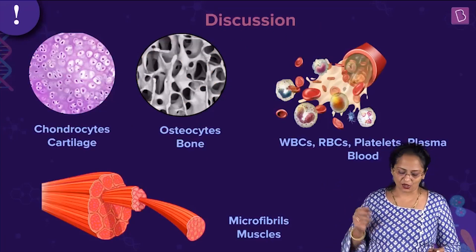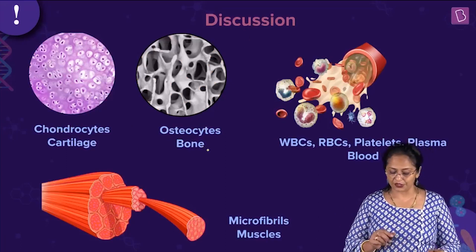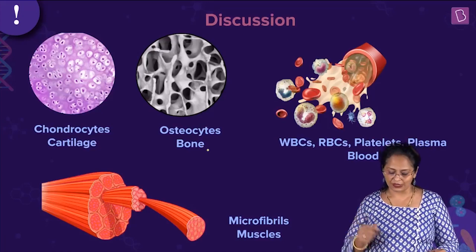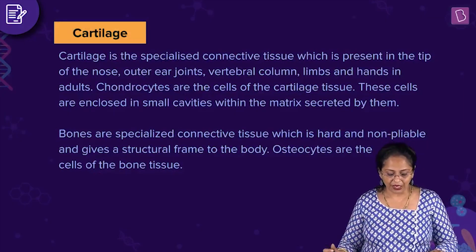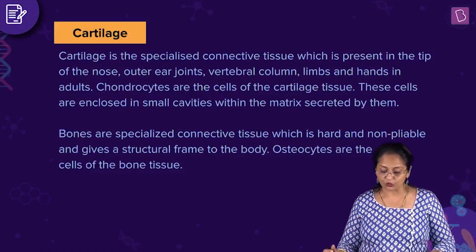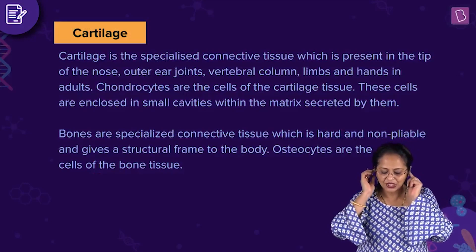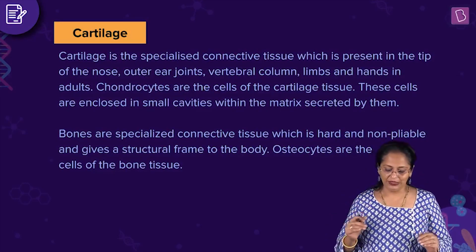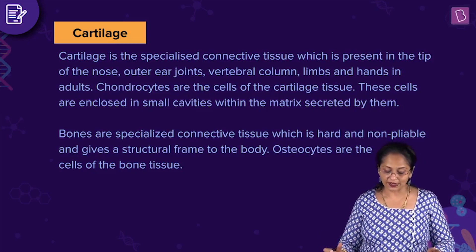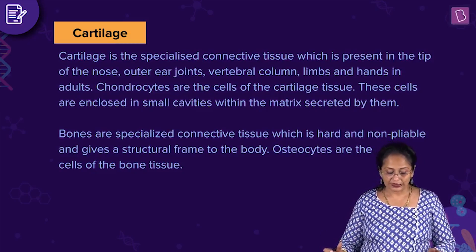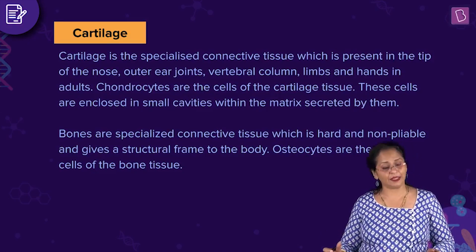You can see the images of chondrocytes found in cartilage, along with bone and blood components and the myofibrils in muscles. Cartilage is a specialized connective tissue present at the tip of the nose, outer ear, joints, the vertebral column, limbs, and hands in adults. Chondrocytes are the cells in the cartilage tissue, enclosed in small cavities within the matrix secreted by them.